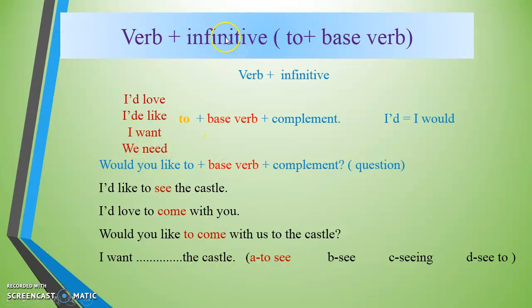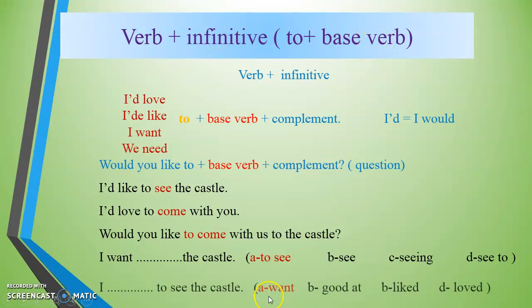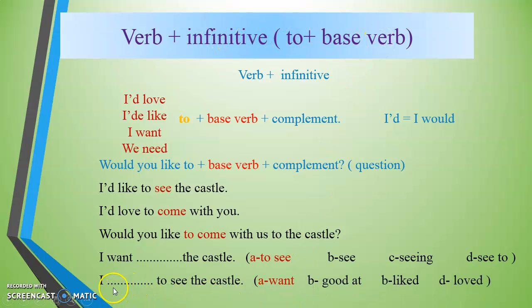Other verbs followed by infinitive include: want, got, good at, like, love — all followed by 'to + base verb' to form the verb infinitive structure.